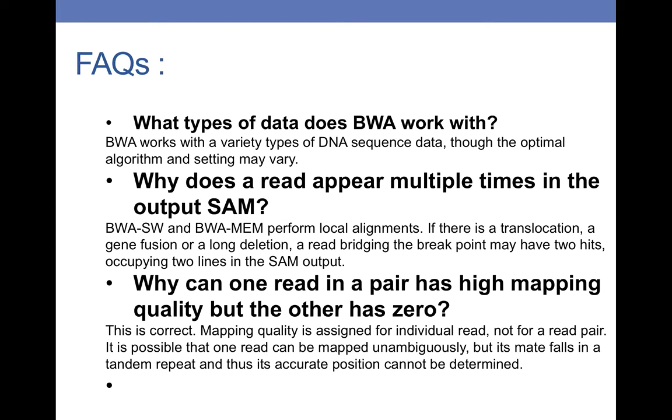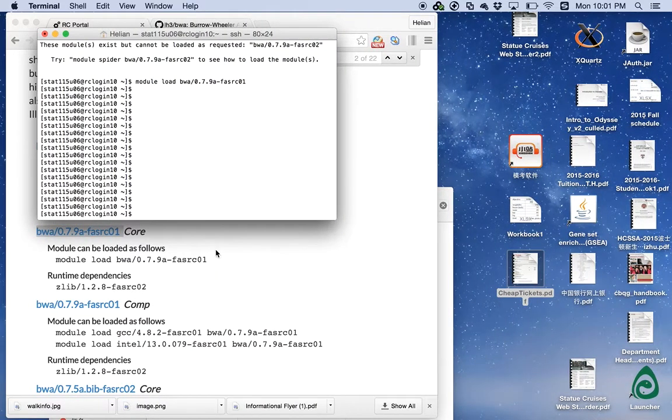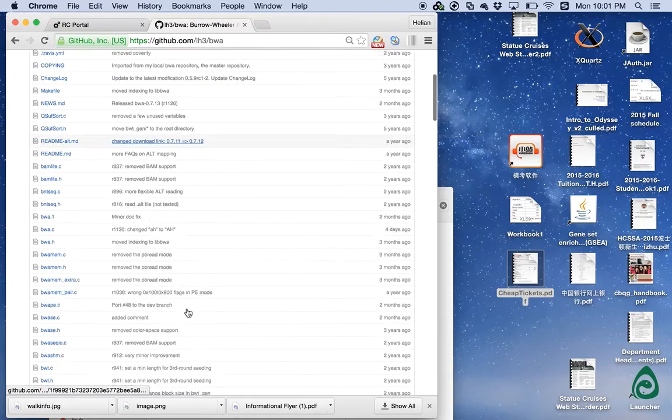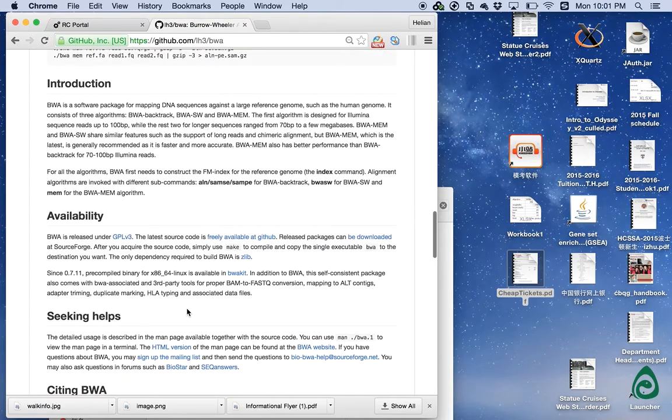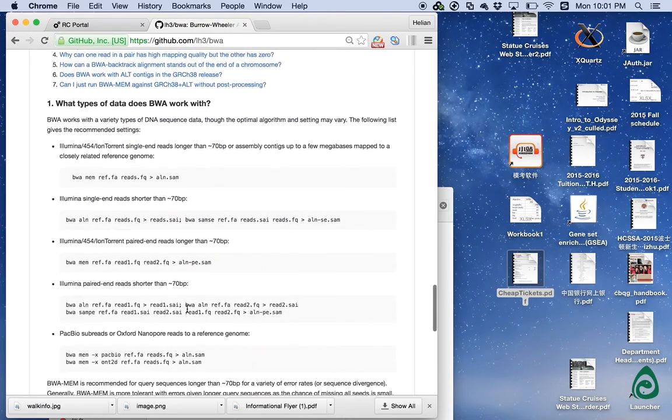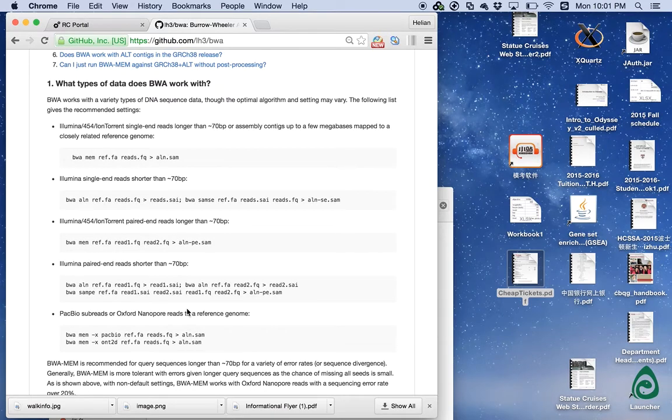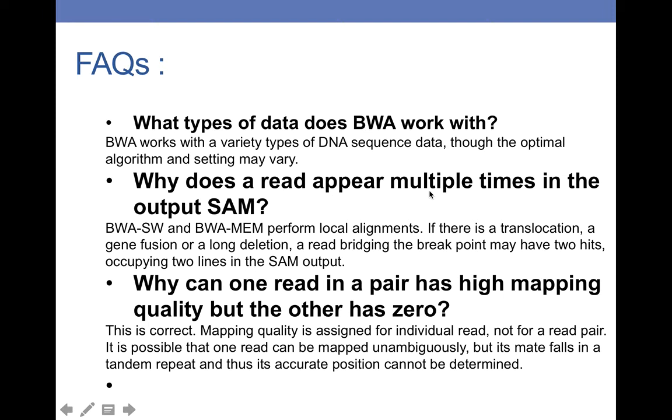Some frequently asked questions. What type of data does BWA work with? Well, actually BWA works with a variety of types of DNA sequence data. You can go onto their website and find the complete list of files it works with and the specific code and parameters you should use along with that file.